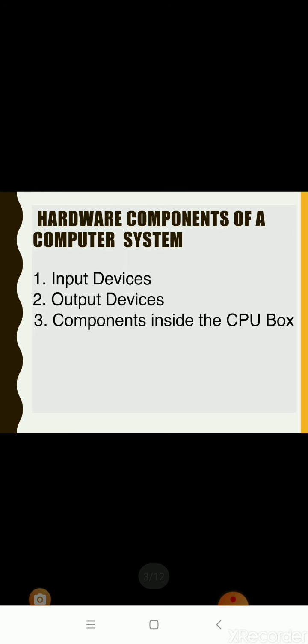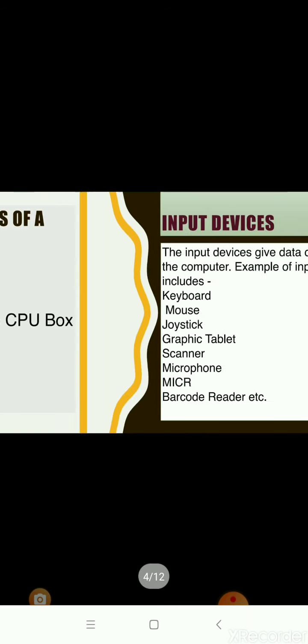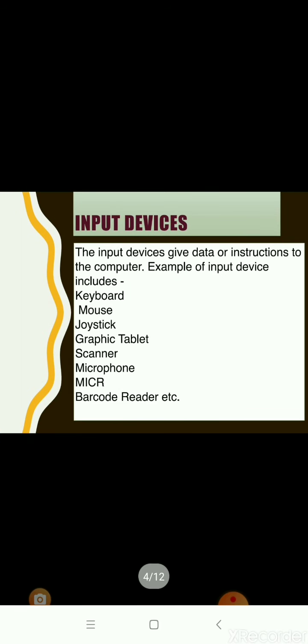Various hardware components that make up a computer system can be broadly divided into three categories: first, input devices; second, output devices; and third, components inside the CPU box. In this video, we will discuss various input devices.